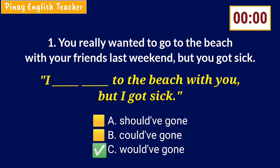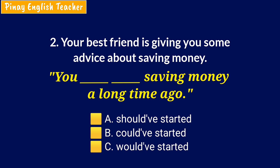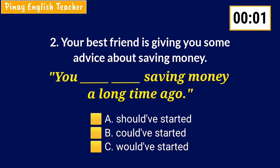Number 2: The situation is your best friend is giving you advice about saving money. Your best friend says: 'You _____ saving money a long time ago.' A. Should've started. B. Could've started. C. Would've started. The answer is A — should've started. It's about giving advice about an action that wasn't done in the past.